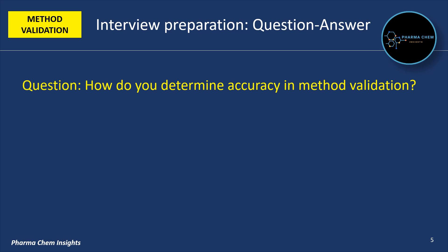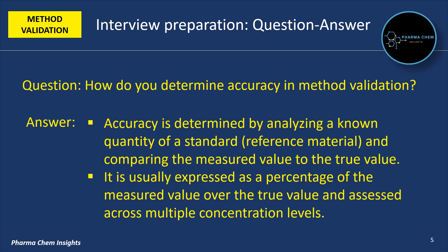Next question: how do you determine accuracy in method validation? Accuracy is determined by analyzing a known quantity of a standard reference material and comparing the measured value to the true value. It is usually expressed as a percentage of the measured value over the true value and assessed across multiple concentration levels.